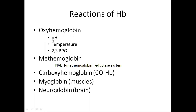Whenever there is an increase in temperature, there will be more dissociation of the oxygen-hemoglobin dissociation curve — that is, more release of oxygen from hemoglobin. Whenever the temperature is low, there will be more binding of oxygen with hemoglobin. Increased 2,3-bisphosphoglycerate will cause a rightward shift of the oxygen-hemoglobin dissociation curve, that is, more dissociation or more release of oxygen from hemoglobin.